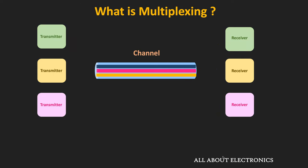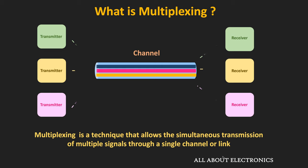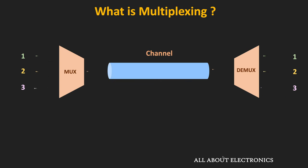By sharing the channel bandwidth with multiple users, the channel bandwidth can be utilized more efficiently, and using the same channel, multiple users can transmit signals at the same time. Multiplexing is a technique which allows the simultaneous transmission of multiple signals through a single channel. In multiplexing, several signals are combined into a single composite signal and then transmitted over the shared medium. At the receiver, these signals are demultiplexed and delivered to the individual users.